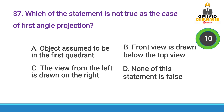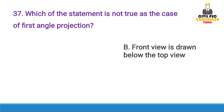Next question: Which of the statements is not true in the case of first-angle projection? Answer option B — the front view is drawn below the top view. In first-angle projection, the top view is placed below the front view.